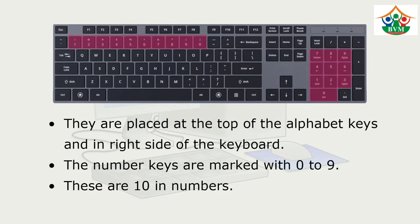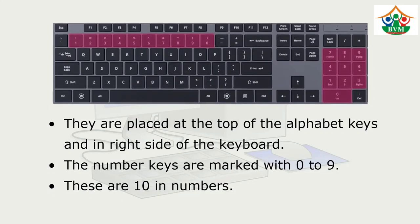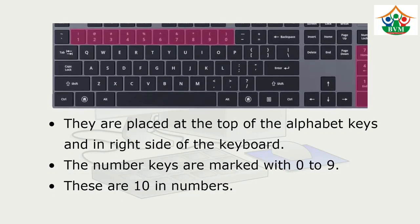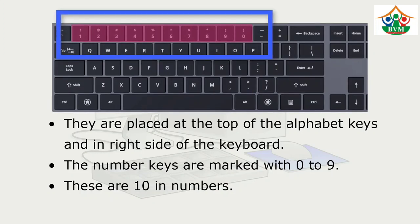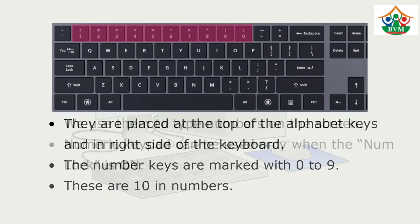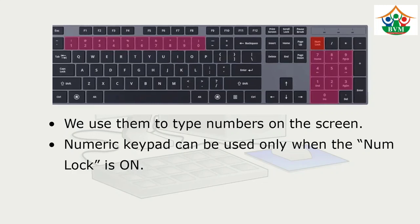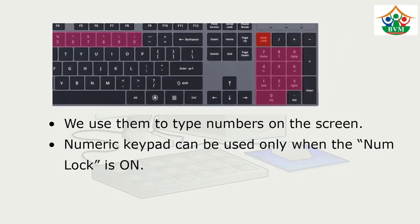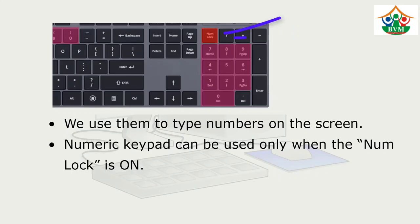Now next are the number keys. They are placed at the top of the alphabet keys and on the right side of the keyboard. The number keys are marked with 0 to 9. These are 10 in number. We use them to type numbers on the screen. The numeric keypad can be used only when the Num Lock is on.